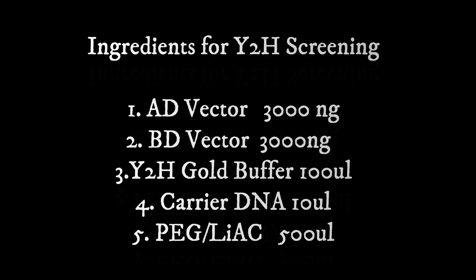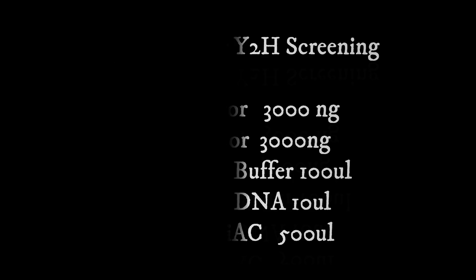At this stage, the ingredients for Y2H screening would be the following. In the previous videos we have already made AD vector and BD vector. The concentration of their DNA should be 3000 nanograms for both. We also need Y2H gold buffer 100 ul, carrier DNA, and lithium acetate working solution 500 ul for each.